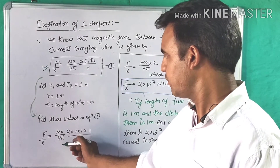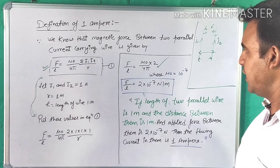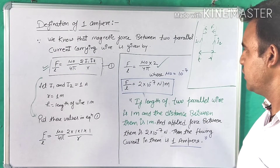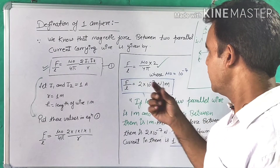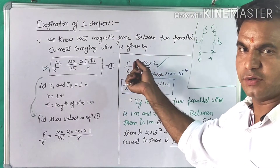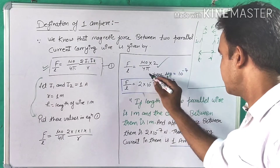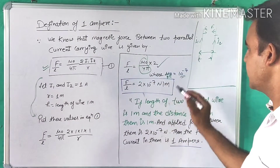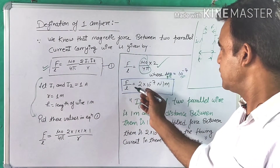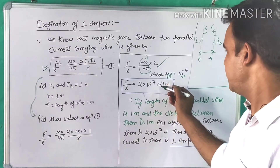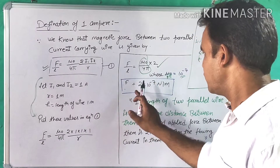F by L equals mu naught upon 4 pi. So we calculated: F upon L equals mu naught upon 4 pi, into 2 upon 1, into 2. The value of mu naught upon 4 pi is 10 to the power minus 7. So the force per unit length we have is: F equals 2 into 10 to the power minus 7 Newton per meter, because this is force per unit length.